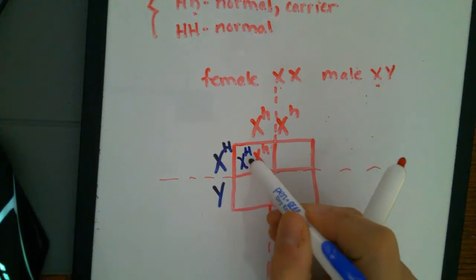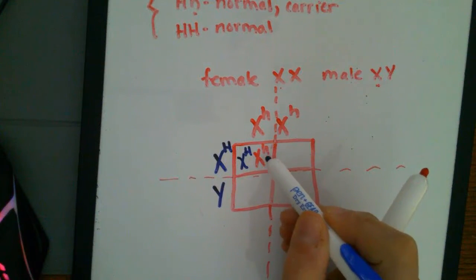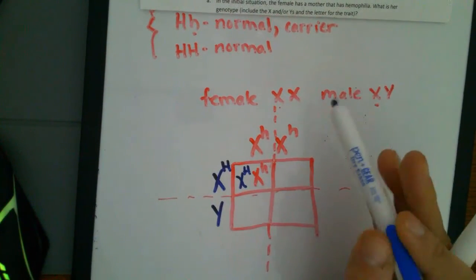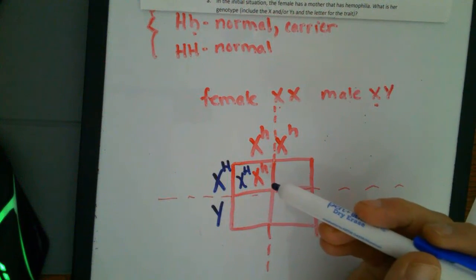So look, this you got from the dad. This one you got from the mom. The allele combination is big H, little H. So this, and it's a daughter because there's two X's. So they would be normal, but they would be a carrier, that offspring.